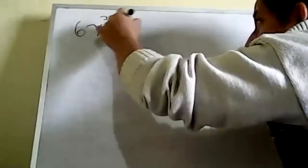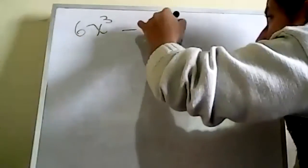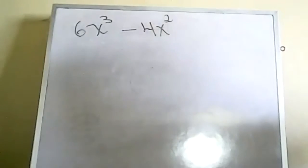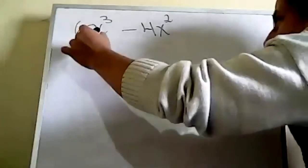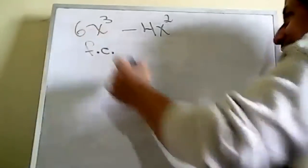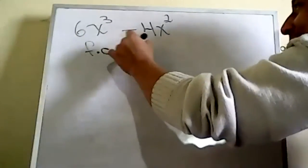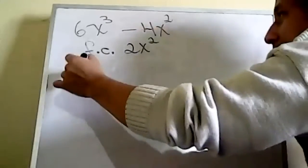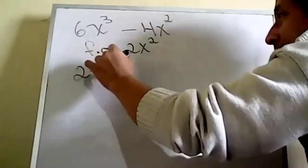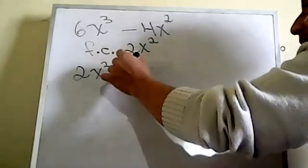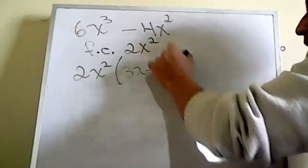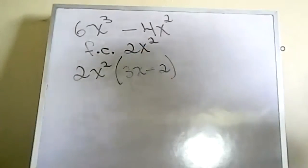Ejercicio rápido: 6x³ - 4x². ¿Cuál es el factor común? 2x al cuadrado. La respuesta: 2x²(3x - 2).